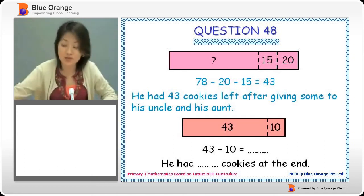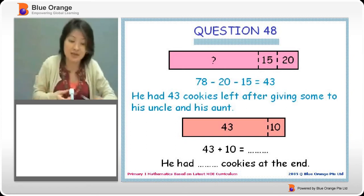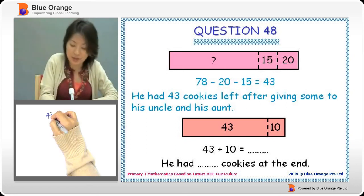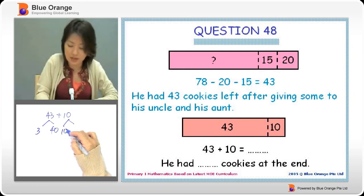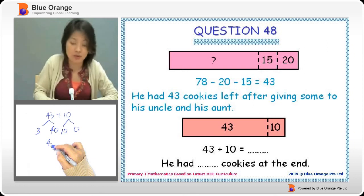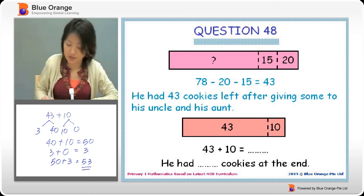Now from the 43, he added another 10. He made another 10. So we take 43 plus 10. We break it up, we get 3 and 40, 10 and 0. So 40 plus 10 gives you 50, 3 plus 0 is 3. So it's 50 plus 3, which equals 53.